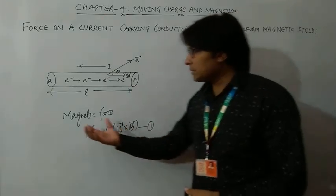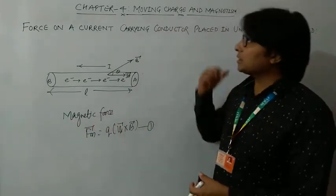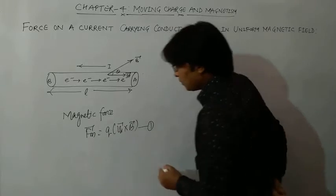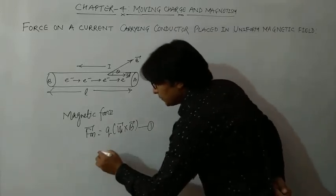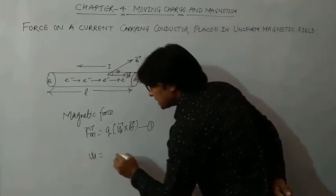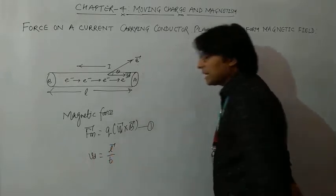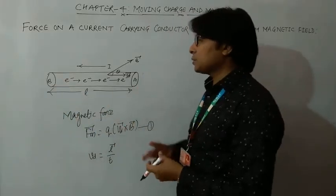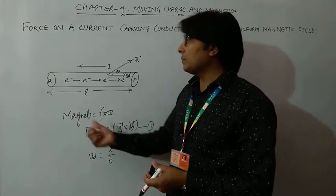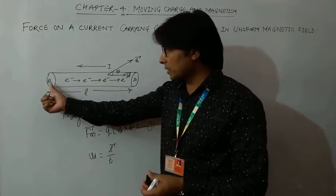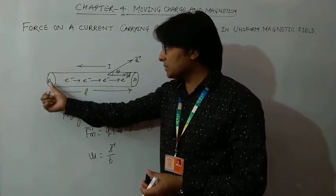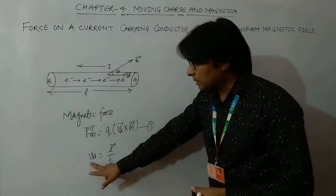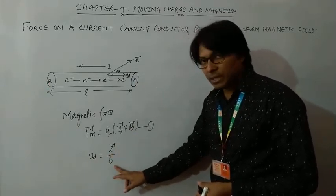This base formula has already been derived at the start of this chapter, so I am using it as a standard formula. Now, I will write the drift velocity of electrons as the length vector L divided by time t, since t is the time taken for an electron to travel from point B to point A. So drift velocity Vd equals L divided by t — this is equation 2.